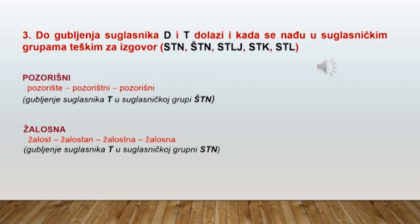Na početku našeg druženja rekli smo da do gubljenja suglasnika D i T dolazi i kada se nađu u suglasničkim grupama teškim za izgovor. To su obično suglasničke grupe: STN, ŠTN, STL, STK, STL. Na primjer, u prisvojnom pridjevu pozorišni suglasnik T se izgubio u suglasničkoj grupi ŠTN. U pridjevu žalosna u ženskom rodu također se izgubio suglasnik T, ali u suglasničkoj grupi STN.